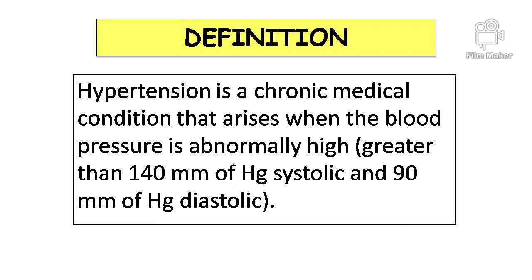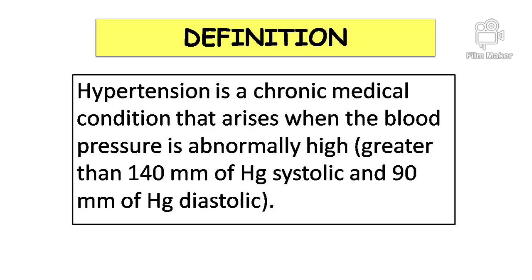Hypertension is a chronic condition where the blood pressure rises abnormally — greater than 140 mmHg systolic and 90 mmHg diastolic.